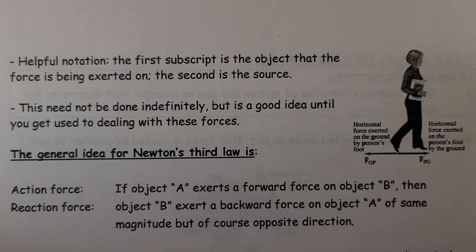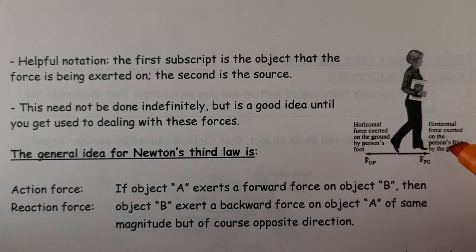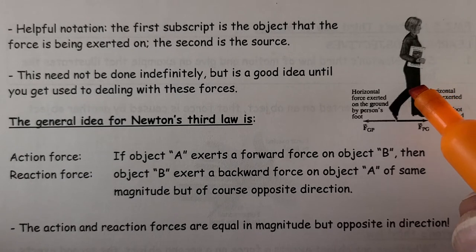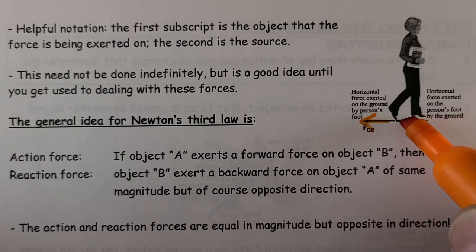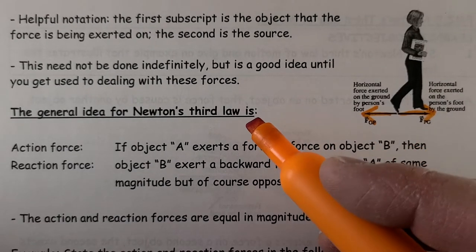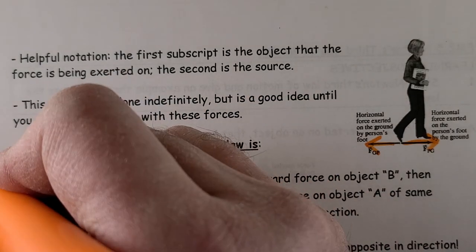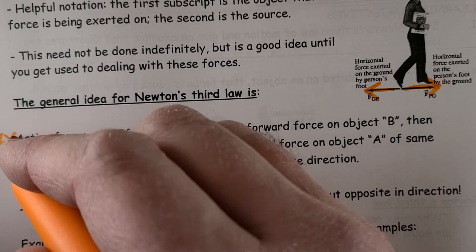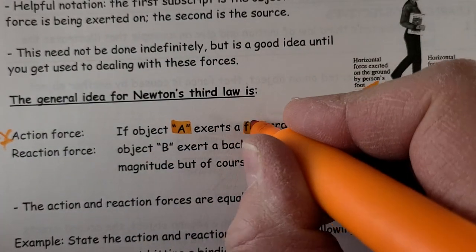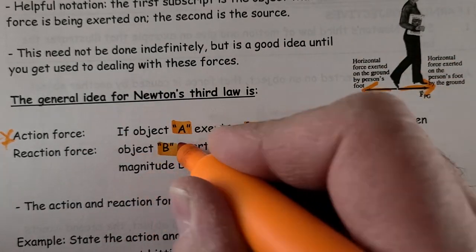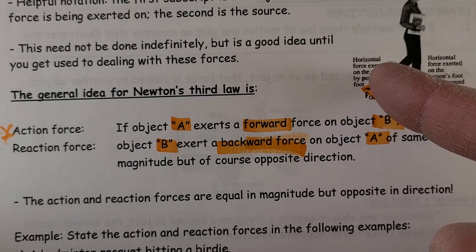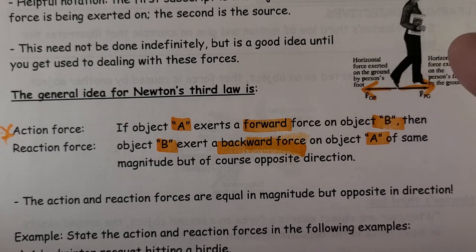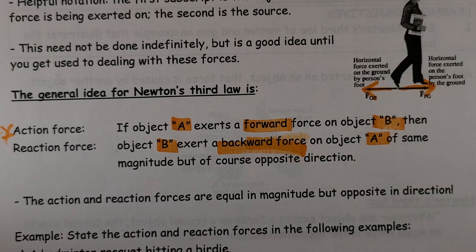So helpful notation to help us sort this out would be to have a subscript here. So if I look over here, if I'm looking at just the simple process of walking, the force, let's see, the horizontal force exerted by the ground on the person's foot, so foot pushes back on ground, and then ground pushes back on foot. You can think of the two objects in there. So we could relate it like this, and this is a key point. Let's put a star right here. If object A exerts a forward force on object B, then the reaction would be, just switch the two objects around, switch the direction of the force, and you've got it. So person pushes backwards on ground, then ground pushes forward on person.